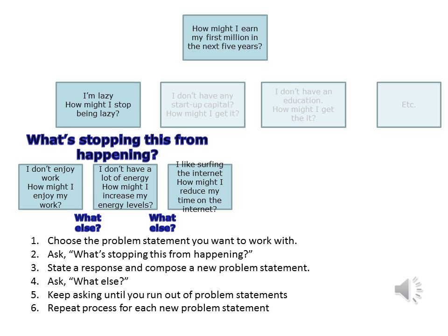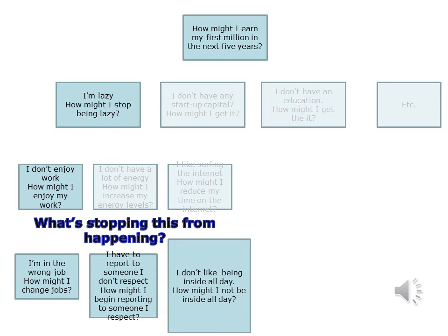You then move down the web for each of the items identified. For example, looking at the problem of how might I stop being lazy, you'd ask what's stopping me from not being lazy? Perhaps you don't like your work. How might I enjoy my work? Perhaps you don't have a lot of energy. How might I increase my energy levels? Perhaps you like surfing the internet. How might I reduce my time on the internet? You could even go one level further. Let's say you realize that a core issue might revolve around not enjoying your work. You might then ask what's stopping you from enjoying your work? Perhaps you're in the wrong job, or report to someone you don't respect, or perhaps you don't like being inside all day. Again, we're seeing the theme of not liking the need to report to someone pop up, and again, without concluding that this is necessarily the case, we might question if this theme is significant.